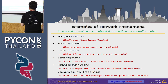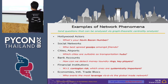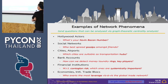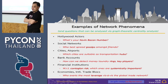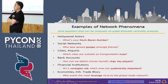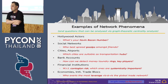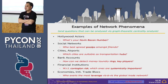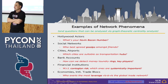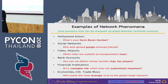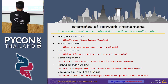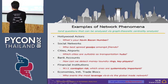These are examples of network phenomena. Let's start with Hollywood factors — what's your Kevin Bacon number? We'll show how to compute that in Python.